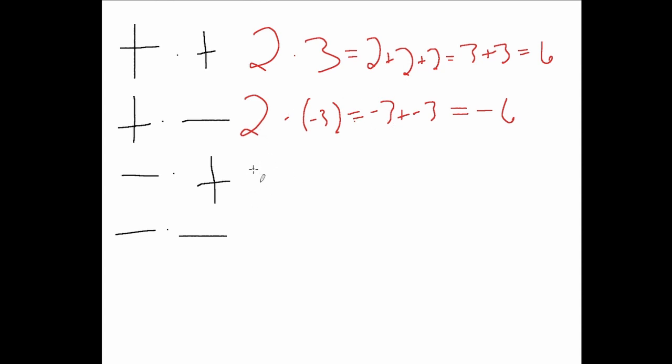For the third example we're going to have -2 multiplied by positive 3, which will equal just -2 plus -2 plus -2, which will equal -6 as well.